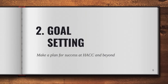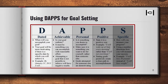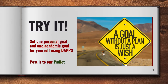Our second topic is goal setting, and that's a read-only slide. The next slide is also a reading slide, but there's a podcast up here in the corner, so you want to listen to that as well. Then you're going to try it out: you're going to set one personal goal and one academic goal for yourself using the DAPS process, and post your answer to Padlet.